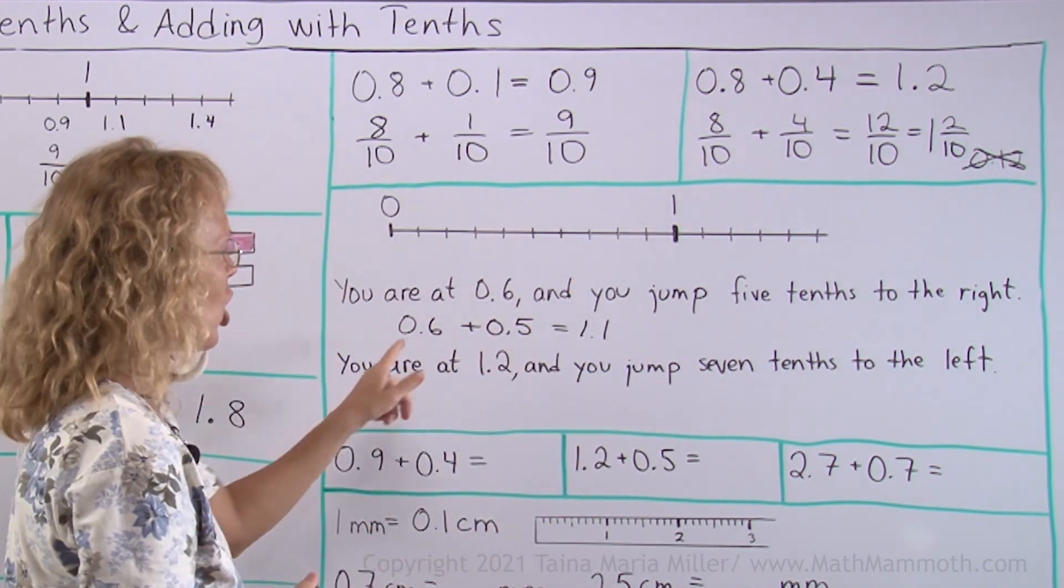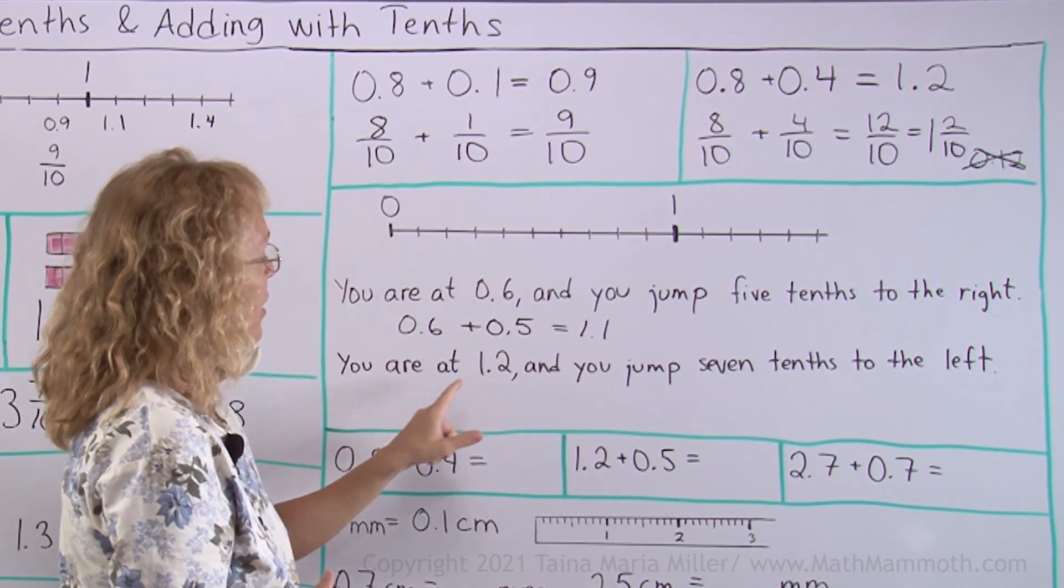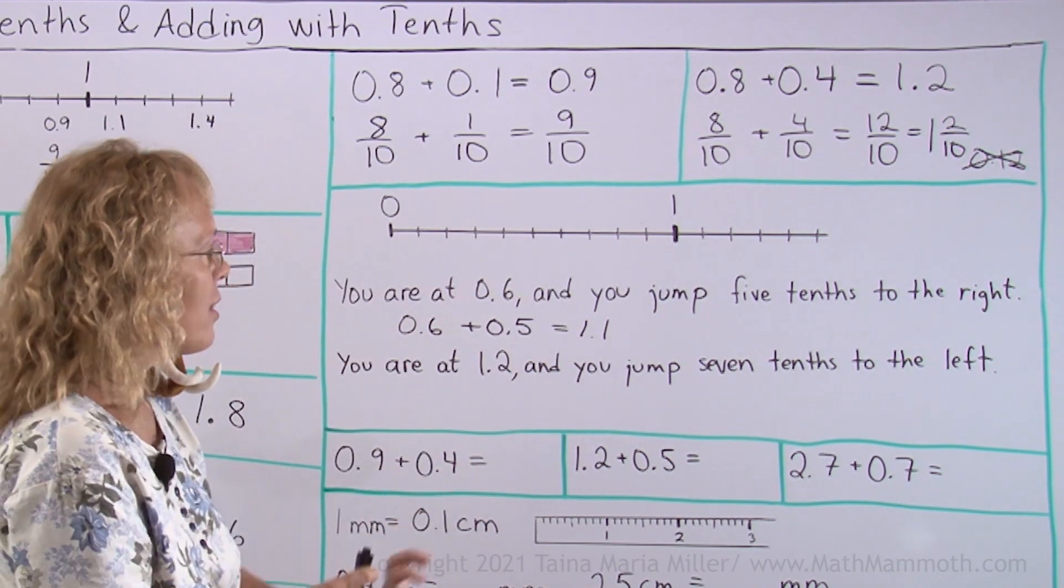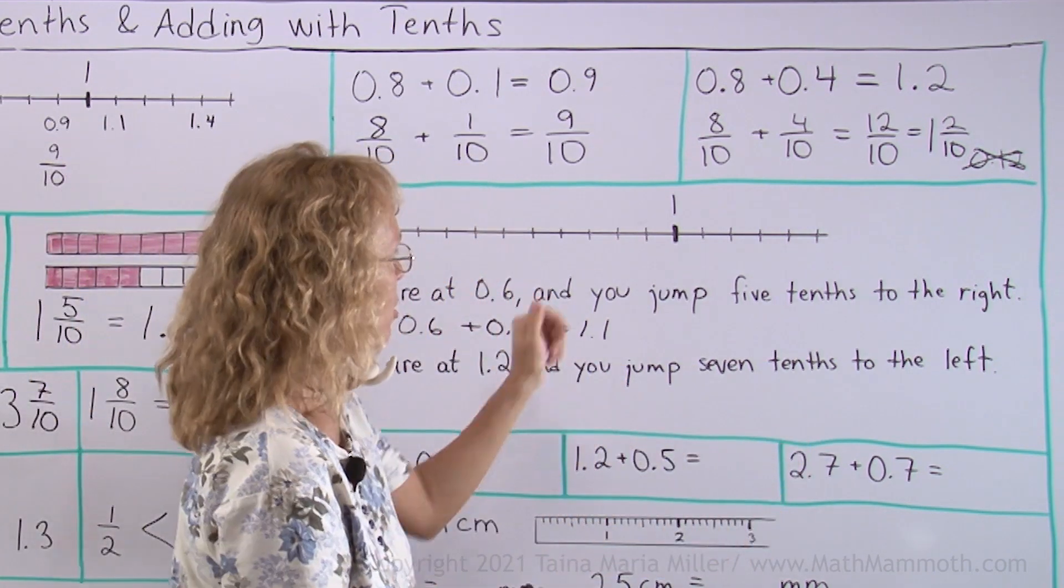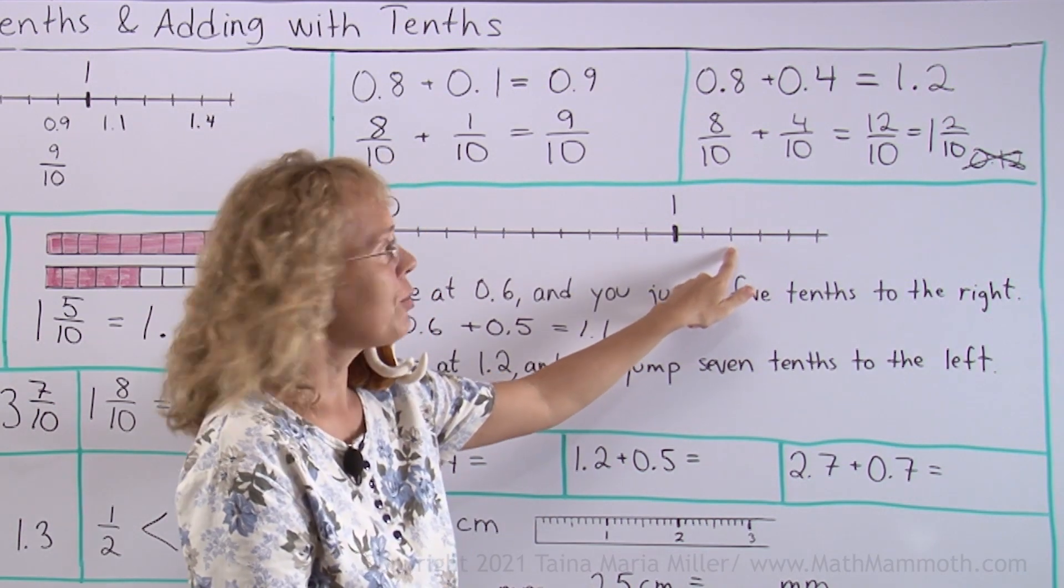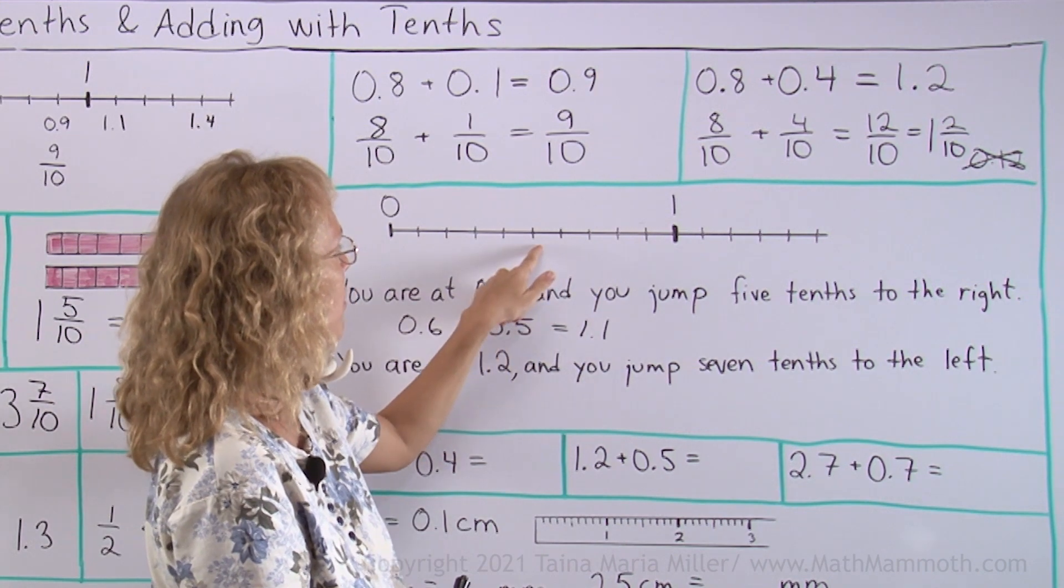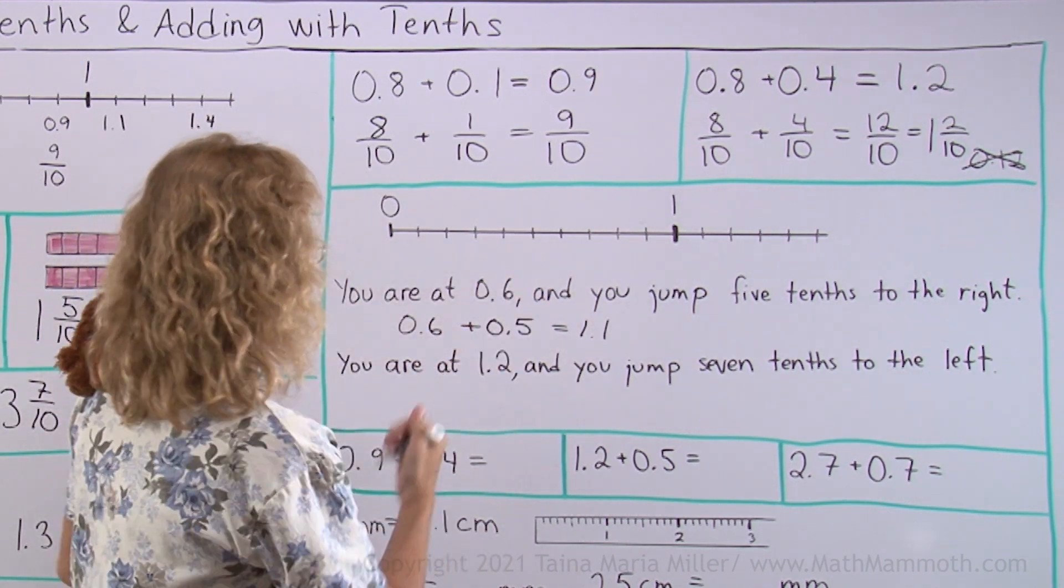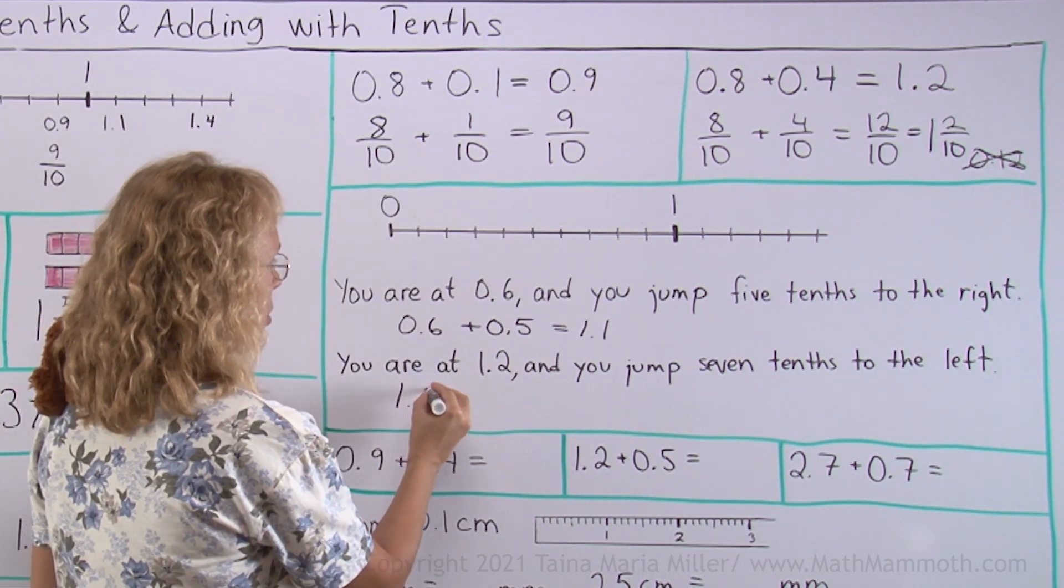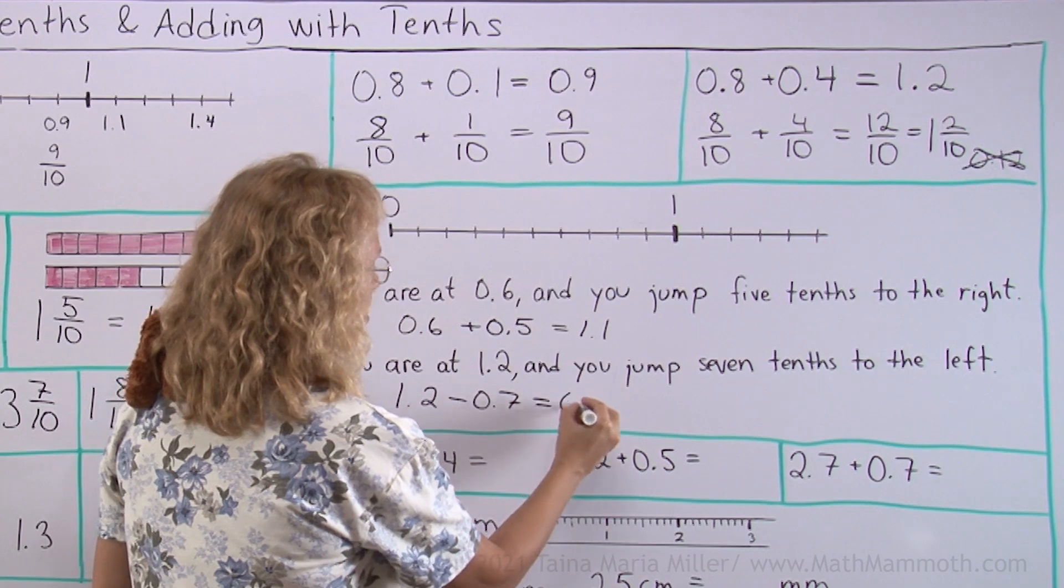Notice again that the answer is not 0.11. You are at 1.2, 1 and 2 tenths. And then you jump 7 tenths to the left. Now that's going to be a subtraction. Because we start here at 1 and 2 tenths, and we jump 7 tenths to the left. 3, 4, 5, 6, 7. Over here. And that is now 5 tenths. Right? So we get the subtraction, 1.2 minus 7 tenths equals 5 tenths.